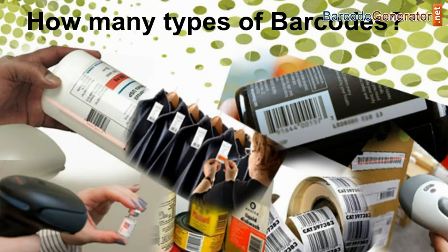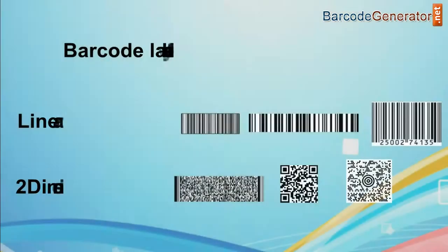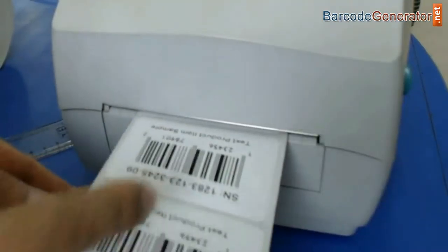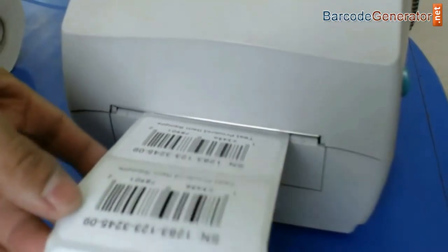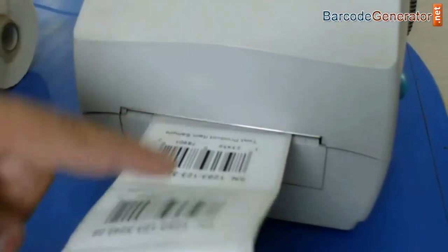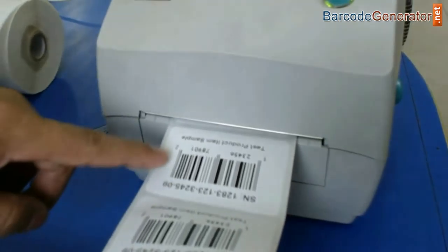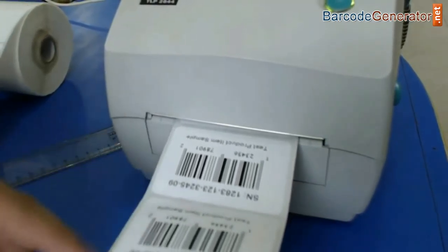How many types of barcodes? Barcode labels are of two types: linear and two-dimensional. Linear barcode is made up of lines and spaces, and encodes data only in one dimension.